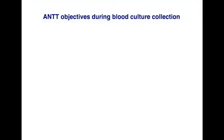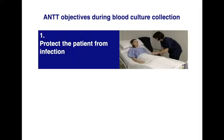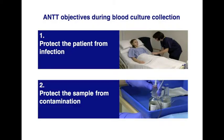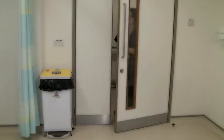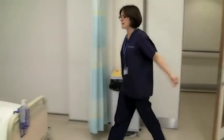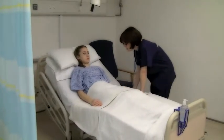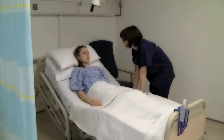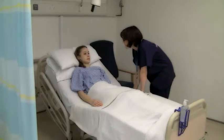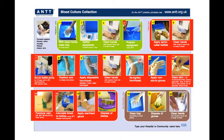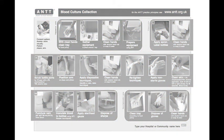During blood culture collection, there are two main objectives for ANTT: one, to protect the patient from infection, and two, to protect the blood sample from contamination. The biggest risk in achieving these objectives is in fact you, the healthcare worker, as infection or contamination are caused by a number of sources involving practice. Consequently, this ANTT guideline is organised around five critical steps.